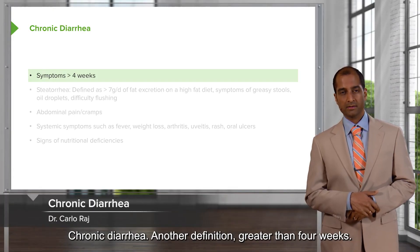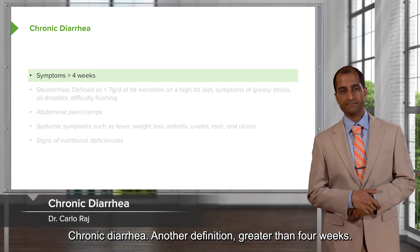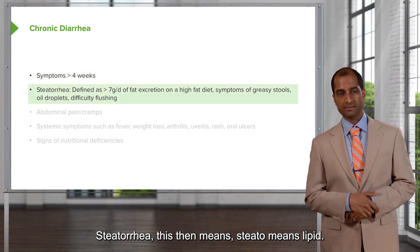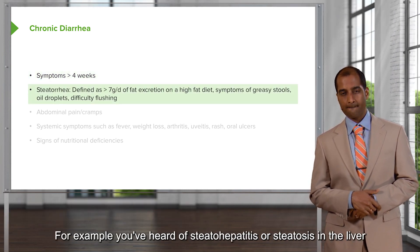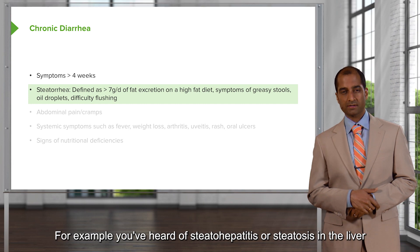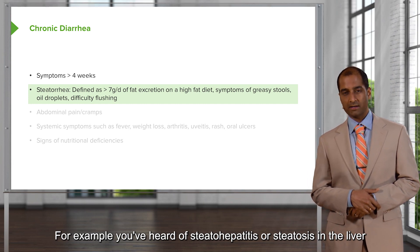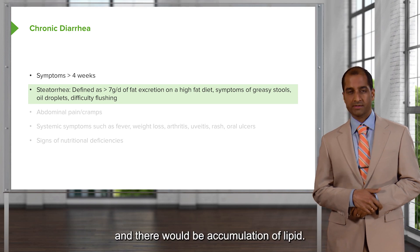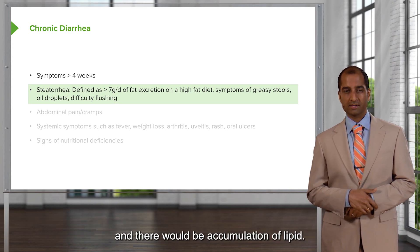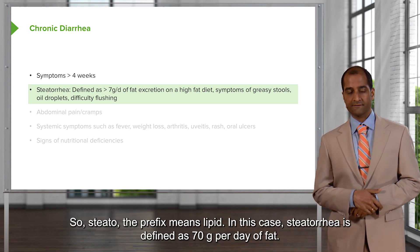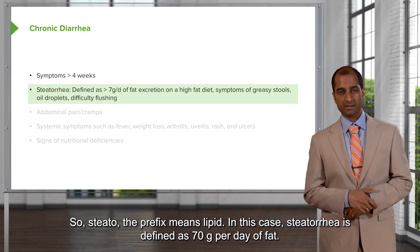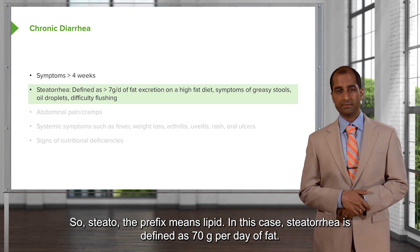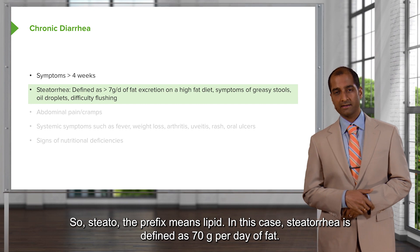Chronic diarrhea — another definition — is greater than 4 weeks. Steatorrhea: 'steato' means lipid. For example, we've heard of steatohepatitis or steatosis in the liver, which is accumulation of lipid. So the prefix 'steato' means lipid. In this case, steatorrhea is defined as 7 grams per day of fat.